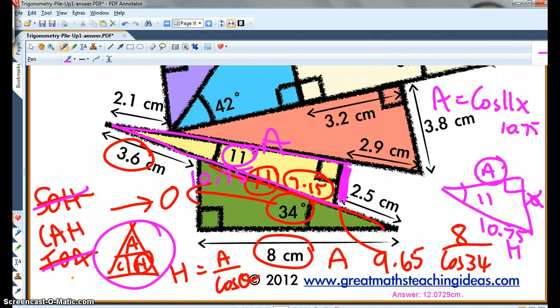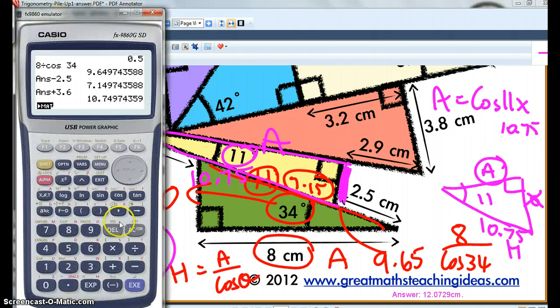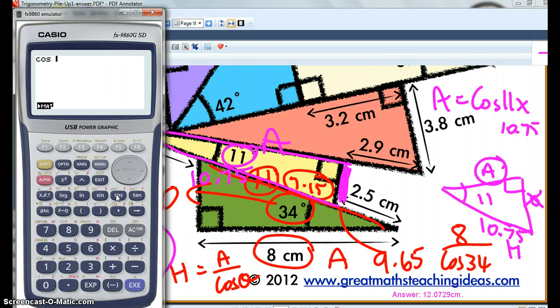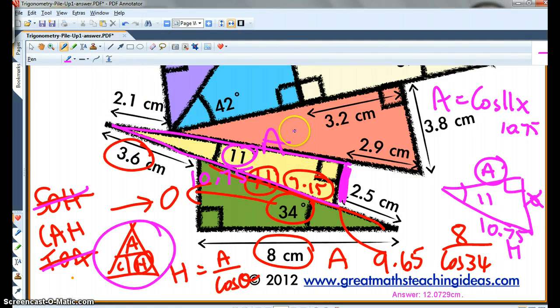So I go cos 11 times 10.75. And I get 10.55. That's 10.55.